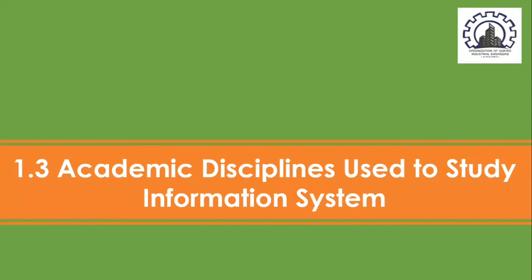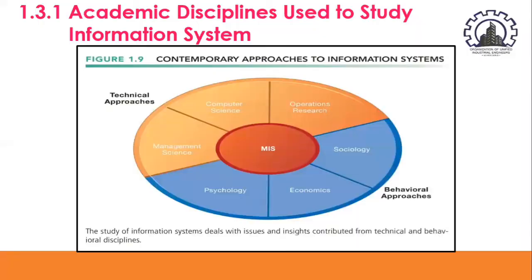The last key area is the academic disciplines used to study information systems. As illustrated in figure 1.9, there are major disciplines that contribute problems, issues, and solutions in the study of information systems. The field can be divided into technical and behavioral approaches. The technical approach emphasizes mathematically-based models to study information systems as well as the physical technology and formal capabilities of these systems. The disciplines contributing to the technical approach are computer science, management science, and operations research.